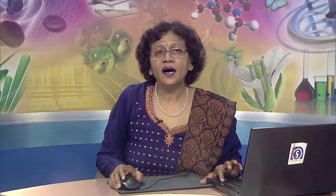Since R, that means the resistance is proportional to ρ, the formula for resistance can be written like this: R = R₀[1 + α(T - T₀)]. Now, this relationship gives a formulation for evaluation of α. That means the temperature coefficient - you take all the other quantities to other side. What you are going to obtain is that α = (R - R₀) / [R₀(T - T₀)].